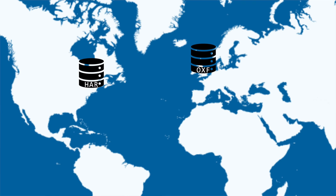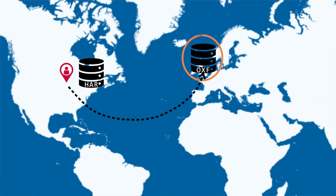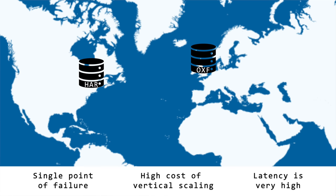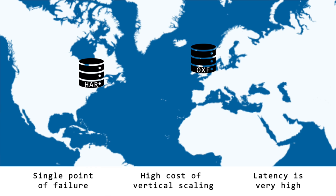We could try to avoid this problem as much as possible: if you need Oxford data as a Harvard student, you connect to the Oxford server cross-continentally — we won't keep any Oxford data in another region. But the old problems are still alive. If the Oxford server goes down, it's still a single point of failure. And if a Harvard student needs to connect to the Oxford server, the request has to go all the way from the US to the UK, which takes time — latency is still bad.